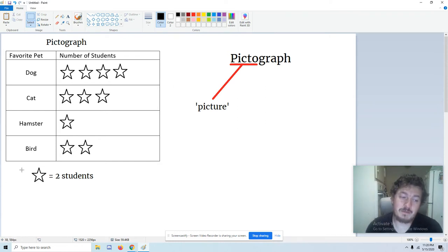But for this graph, this pictograph, a star is two people. So if we look at hamster, how many people picked hamster for their favorite pet? There's one star, and one star is worth two students. So two people picked hamster to be their favorite pet. Not one person. A star is not worth one person. It does not represent one person. It represents two people. So the answer for hamster is two people.